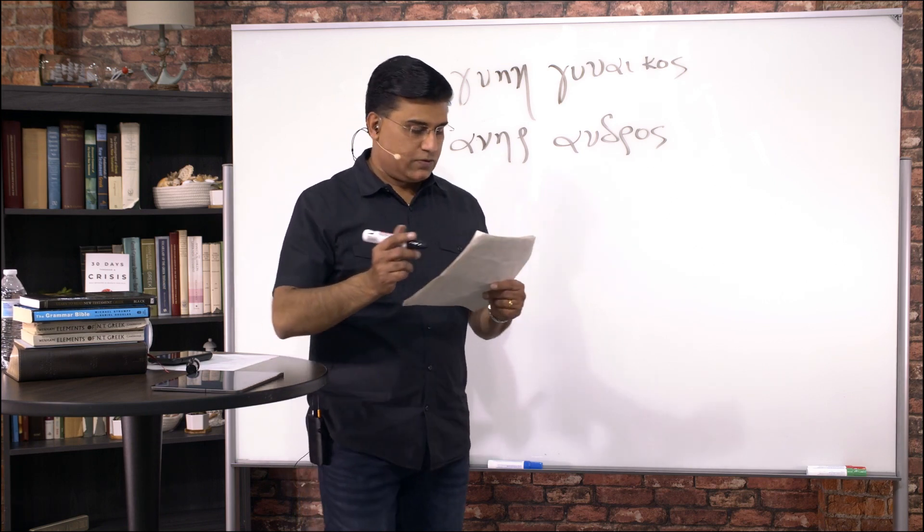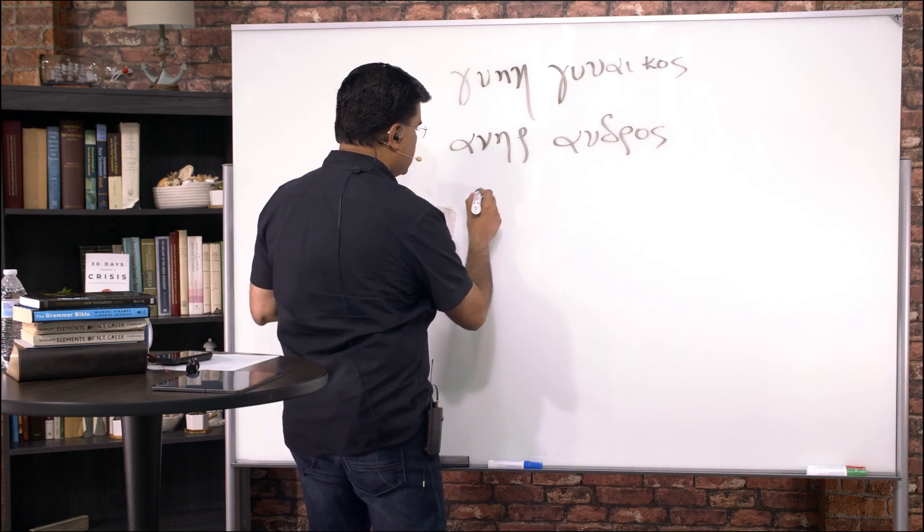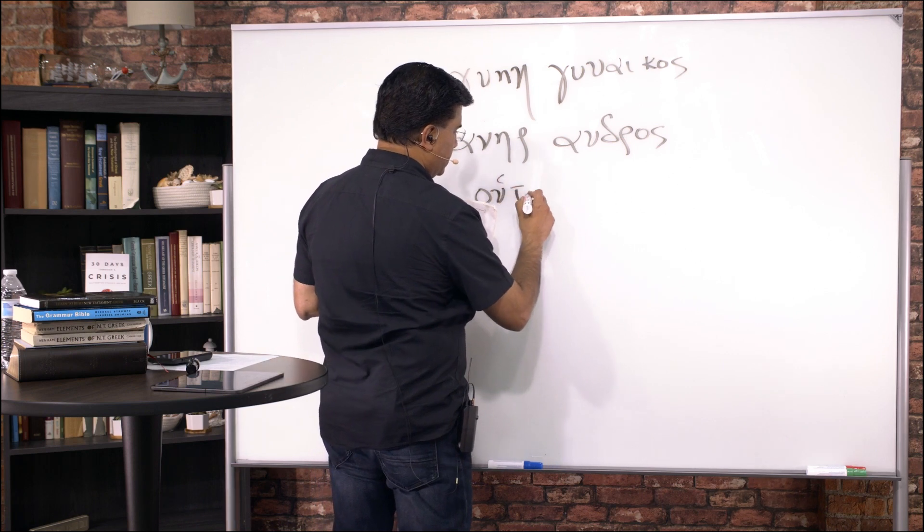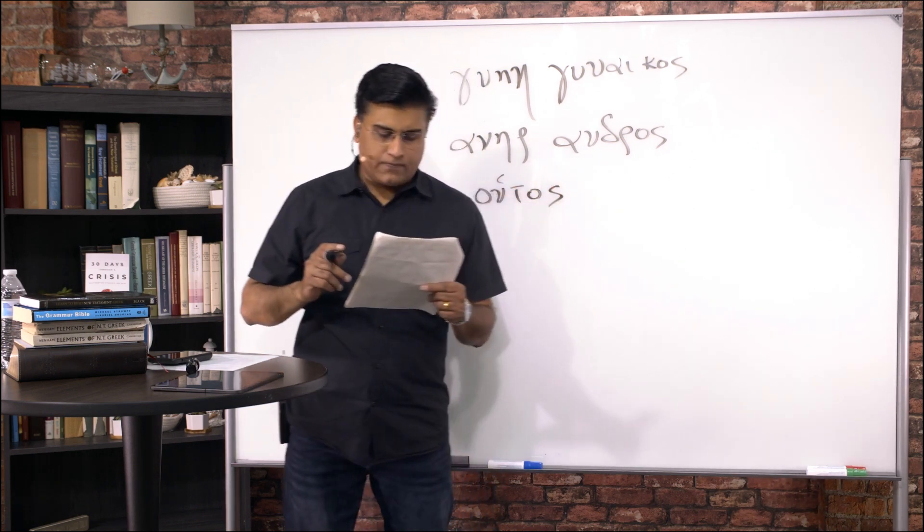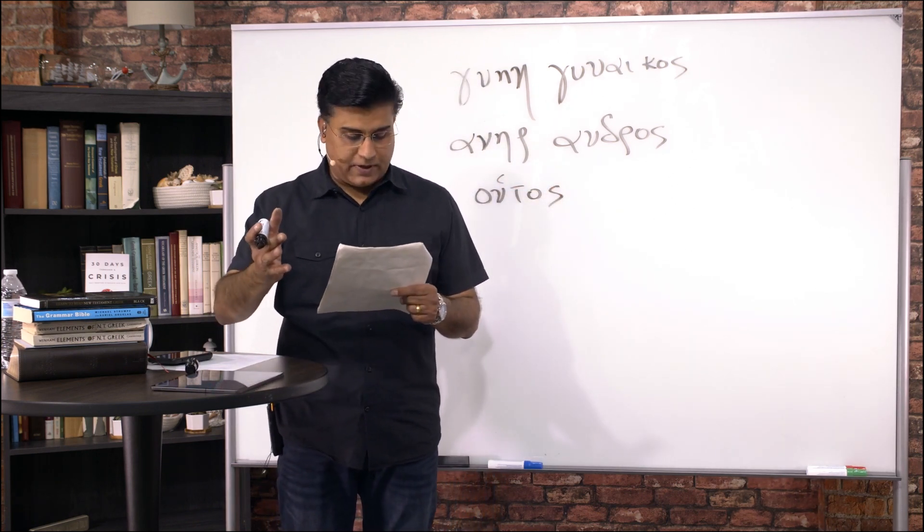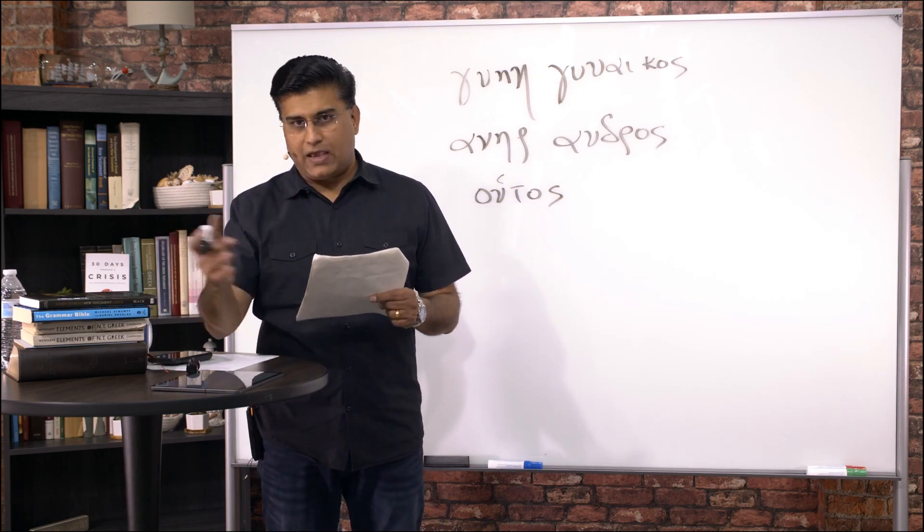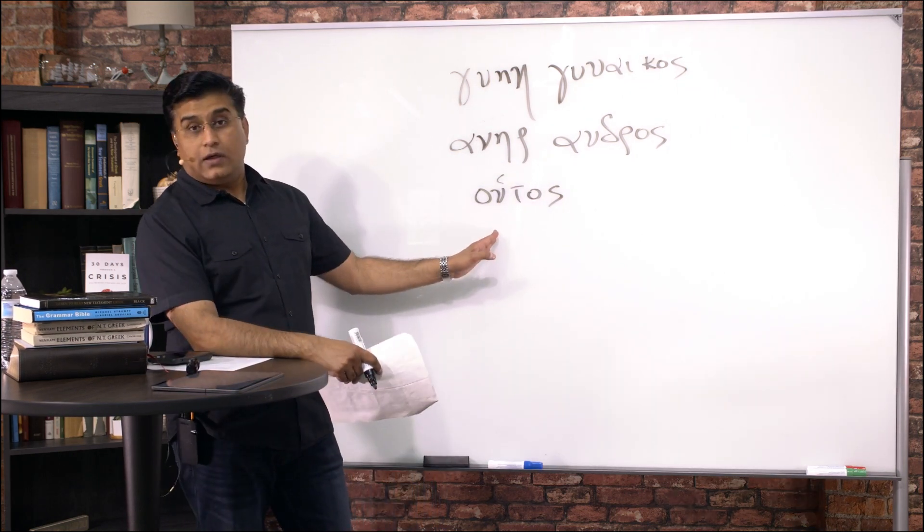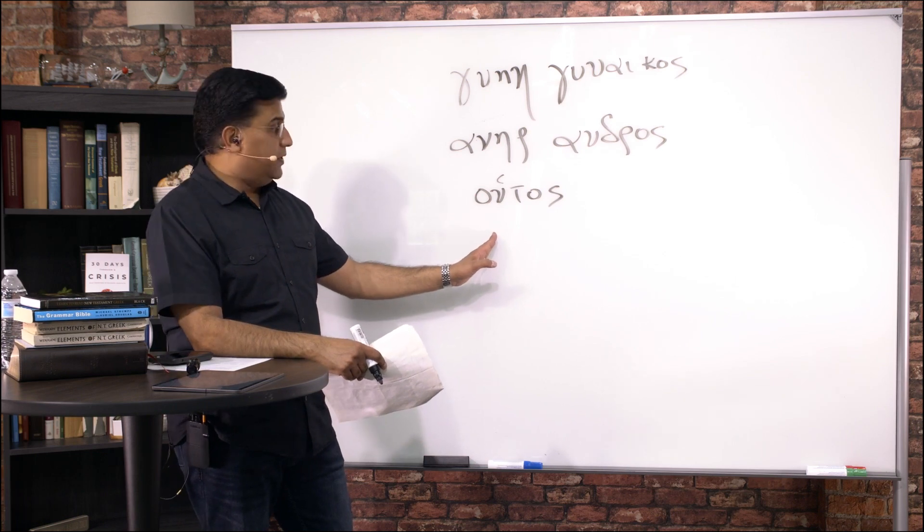Uthos. Uthos. Is thus. Uthos. Thus. Or. In this manner. Okay. Uthos would be. Thus. Or in this manner. Again. Modern. And koine. Would be utos.